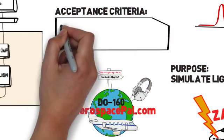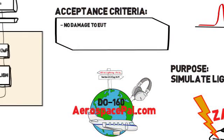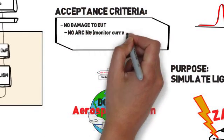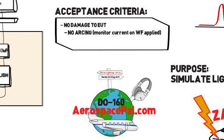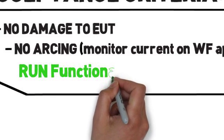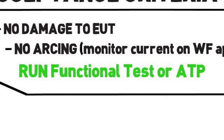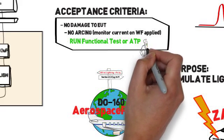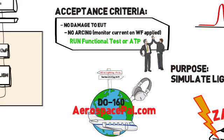Ensure that there's no arcing during the test by monitoring the current seen by the applied waveform. Once the waveforms have been applied, run a functional test on the spot or an ATP to ensure your EUT is operational and has not been affected by the test. And that's one half of D160 section 22 pin injection.